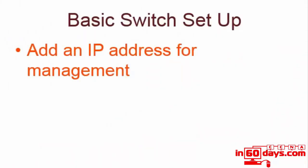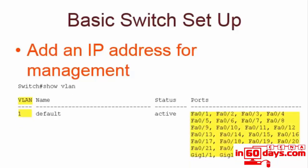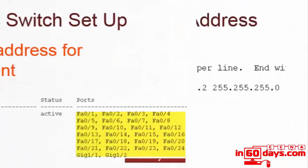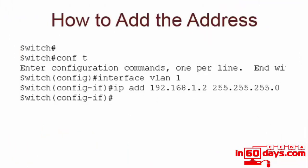For basic switch setup: switches all have a layer 3 address that can be added for management purposes, so you can telnet to the switch and do configuration. The IP address can also be used with network monitoring software that monitors devices for errors, traffic, and down interfaces. If you type 'show VLAN', by default all ports are in VLAN 1, which is the default VLAN, also known as the native VLAN. When you add an IP address onto the switch, it will usually be for VLAN 1.